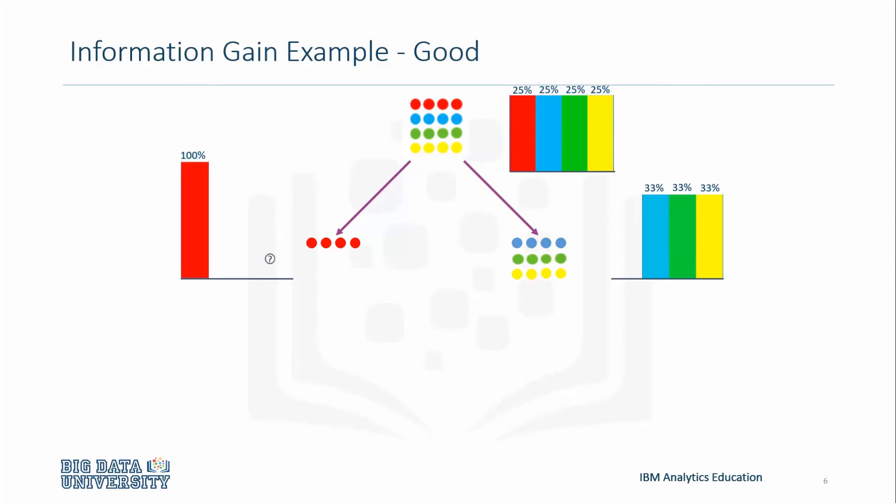Note that in these examples, the attribute used in the split will be ignored for simplification. From this split, all of the red dots go to the left side, and the rest of the dots go to the right side.